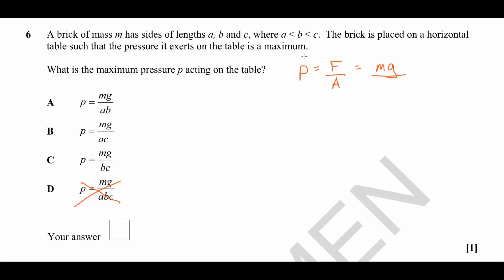To give us the maximum possible pressure, we need the smallest possible area because pressure is inversely proportional to area. So we need to choose the two sides that give the smallest area. To do that, we should choose the two smallest sides, which are A and B. Hence, our answer is answer A.